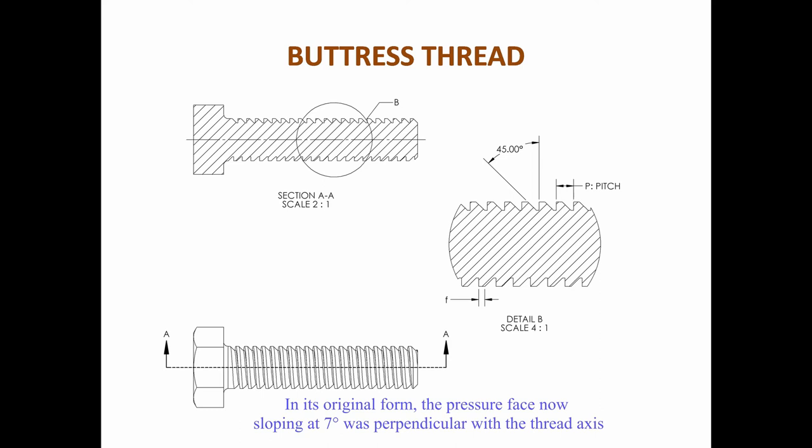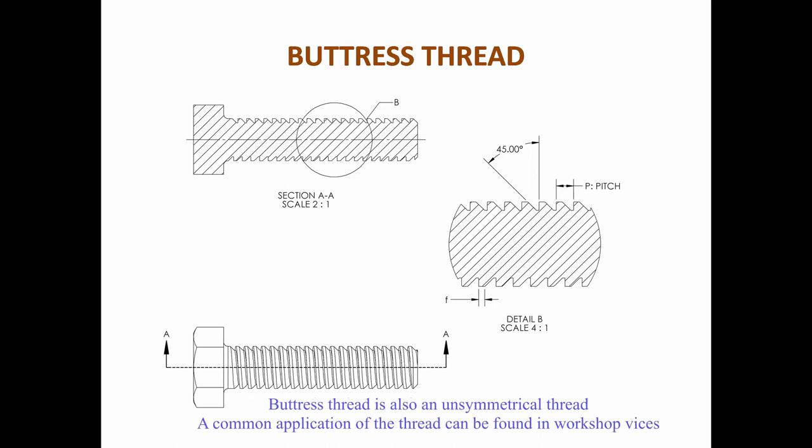In its original form, the pressure surface of the buttress thread was perpendicular to the thread axis; it now slopes at 7 degrees. The buttress thread has an included thread angle of 45 degrees and is capable of withstanding extreme axial loads in one direction. It is an unsymmetrical thread, and a common application can be found in workshop vices.